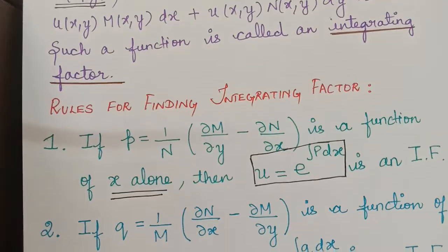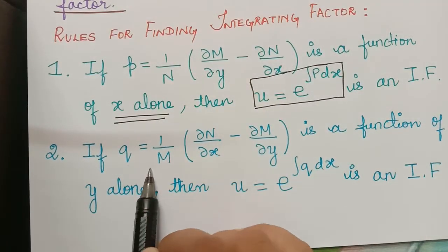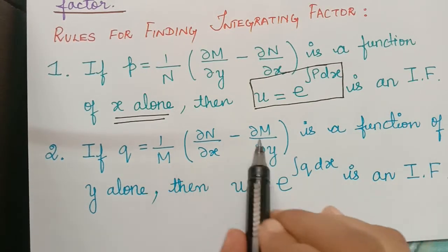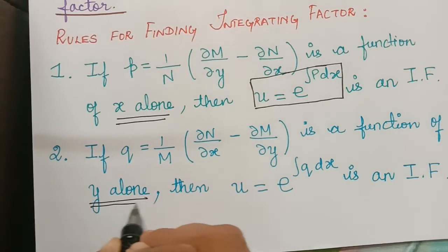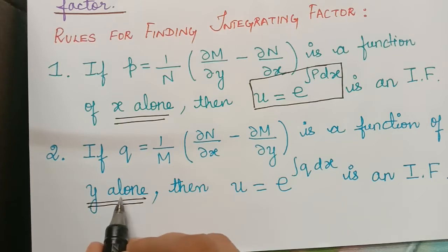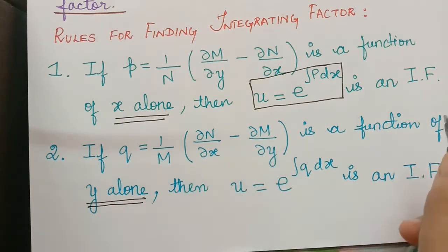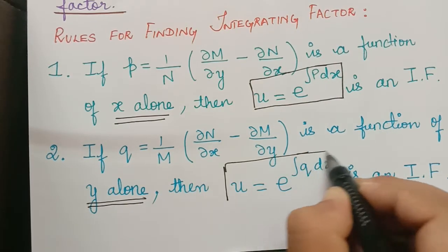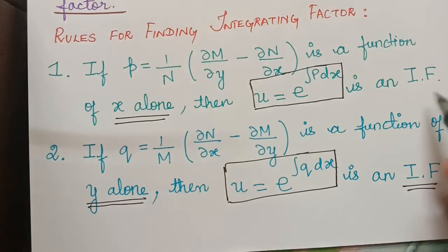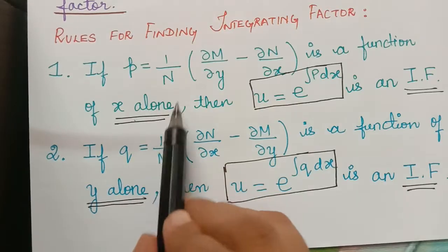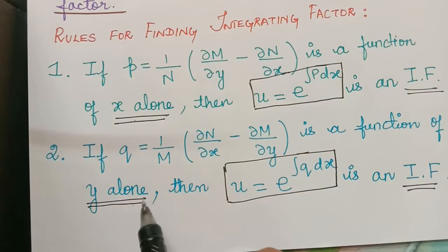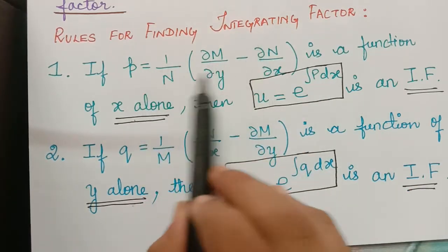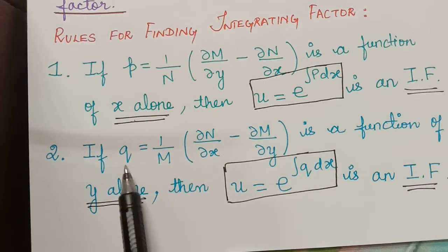If the first rule is not satisfied, then we evaluate Q = (1/M)(∂N/∂x − ∂M/∂y). If this is a function of y alone — meaning it will be independent of x, with no term in x — then u = e^(∫Q dy) will be the integrating factor. So, in the first rule the result must be independent of y, and in the second rule it must be independent of x. If the first rule is not satisfied, we move on to evaluating Q.